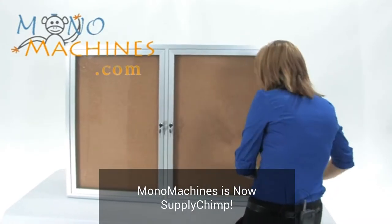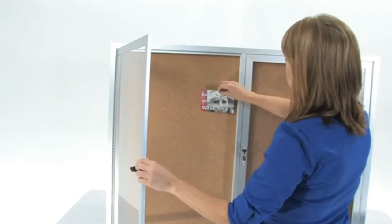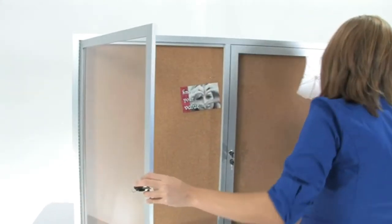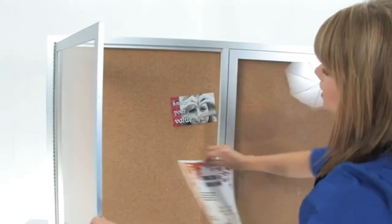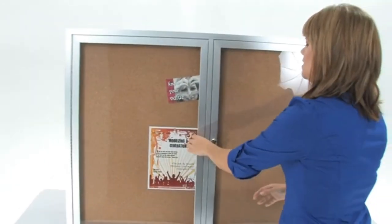I'm going to show you how to use it. Very easy and simple. Just unlock here with the key to post some announcements. Say we're having a potluck at the office or a bike to work day that we want to promote. Lock it back up again.